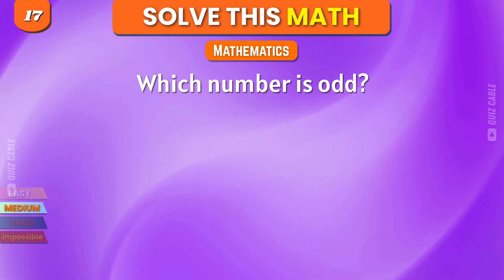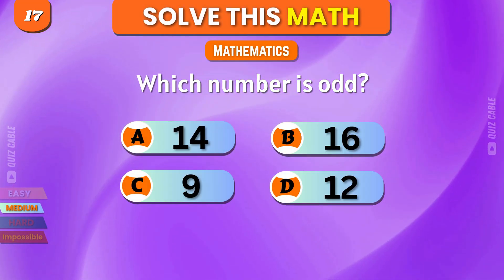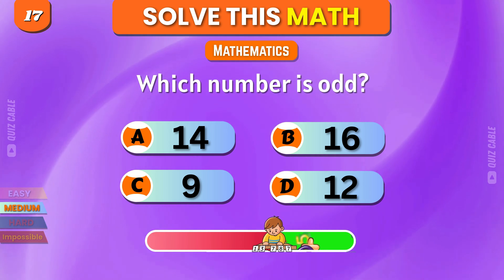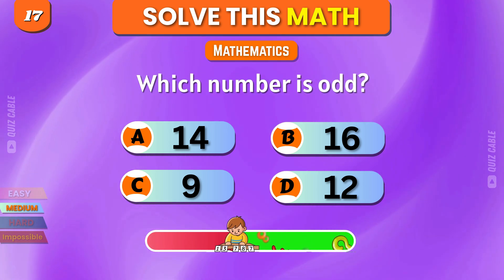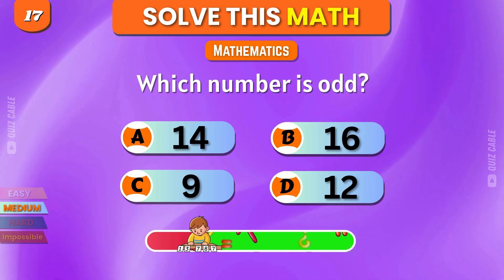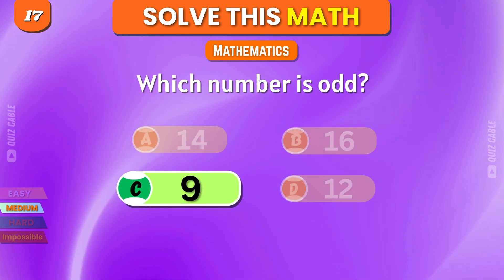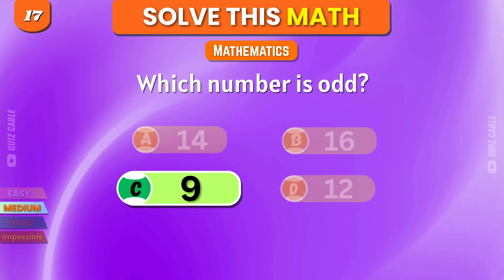Which number is odd? 14, 16, 9, 12. Correct, 9.